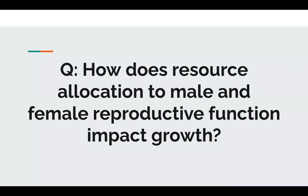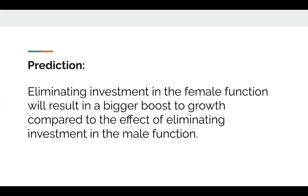The question I'm proposing is: how does resource allocation to male and female function impact the growth of the simultaneous hermaphrodite? I would predict that experimentally eliminating investment in the female function should result in a bigger boost to growth compared to the effect of eliminating investment in the male function.